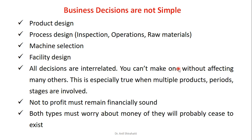Business decisions are not simple. You may have to take a product decision, a process decision, decisions about when to do inspections, which operations to follow, which raw material to select, machine selection, or facility design. All these decisions are interrelated — you cannot make one without affecting many others. This is especially true when multiple products, periods, and stages are involved. Even nonprofit organizations must remain financially sound; both types must worry about money or they will probably cease to exist.